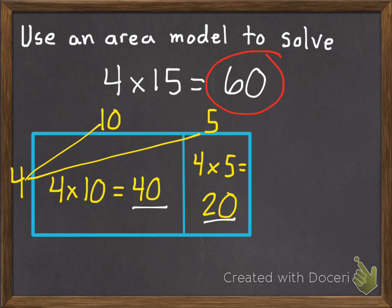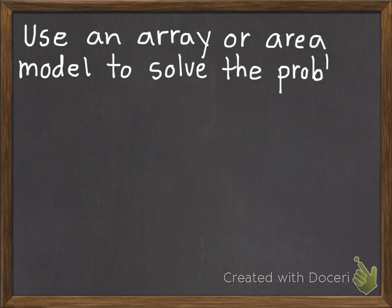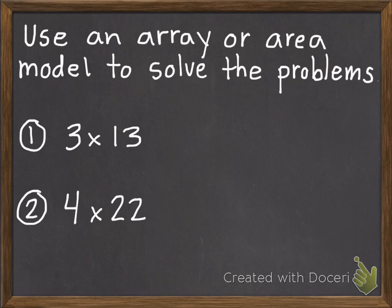If you've got the hang of it, move on to the problems you'll show me in class. If you're still a little confused, go ahead and go back and re-watch some of the examples again. Here are your problems — you can use an array or area model to solve them. You can do one of each, or if you have a favorite, you can use it on both. Problem number 1: 3 times 13. Problem 2: 4 times 22. You'll show those to me in class. Thank you and have a wonderful day.